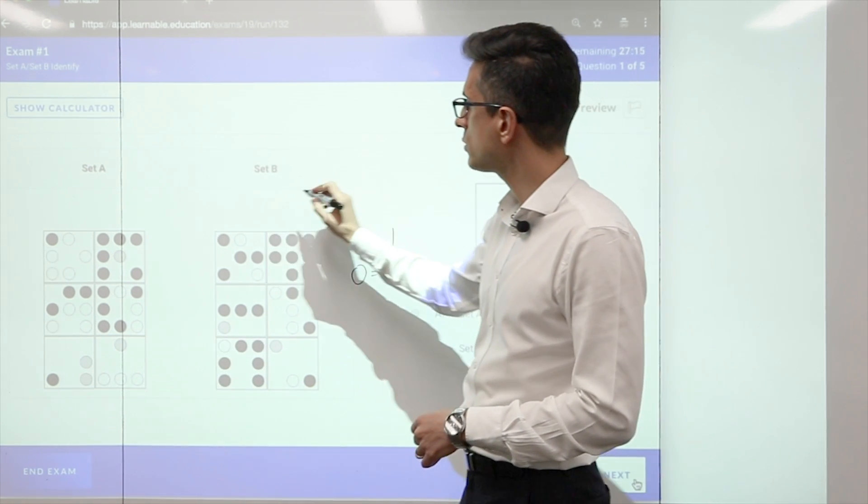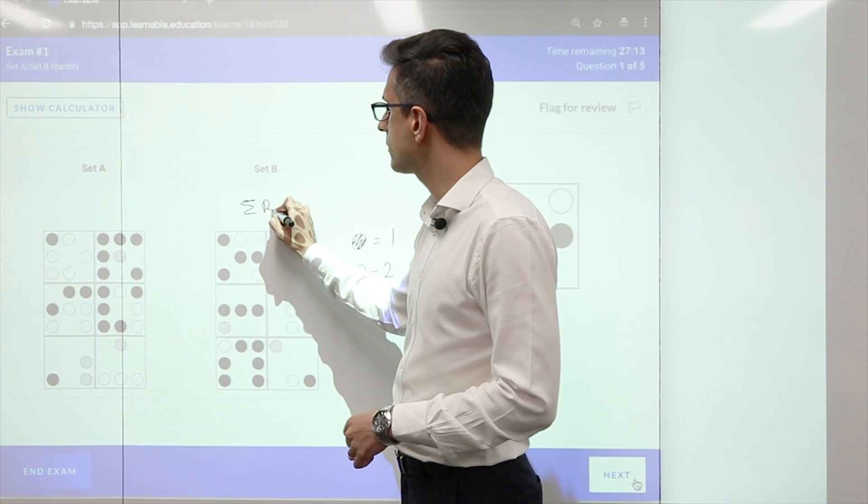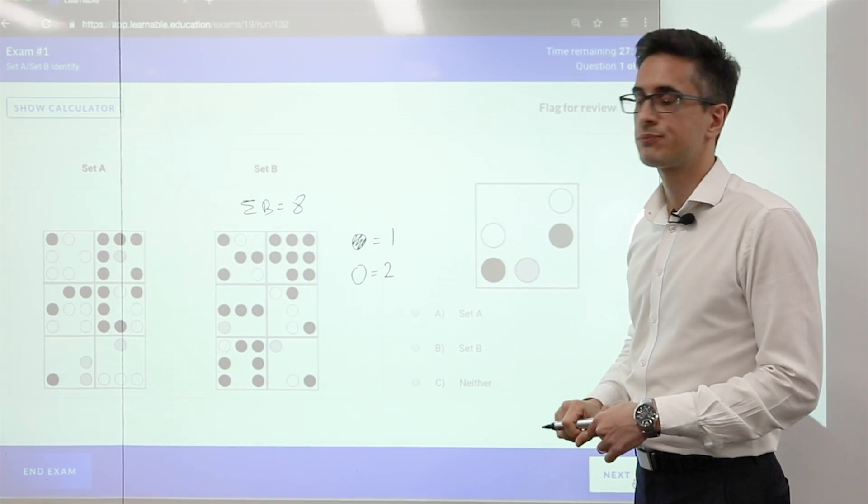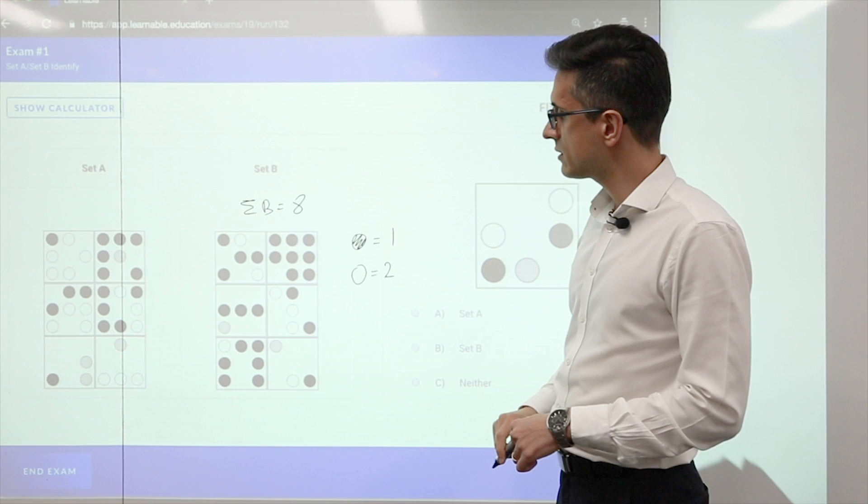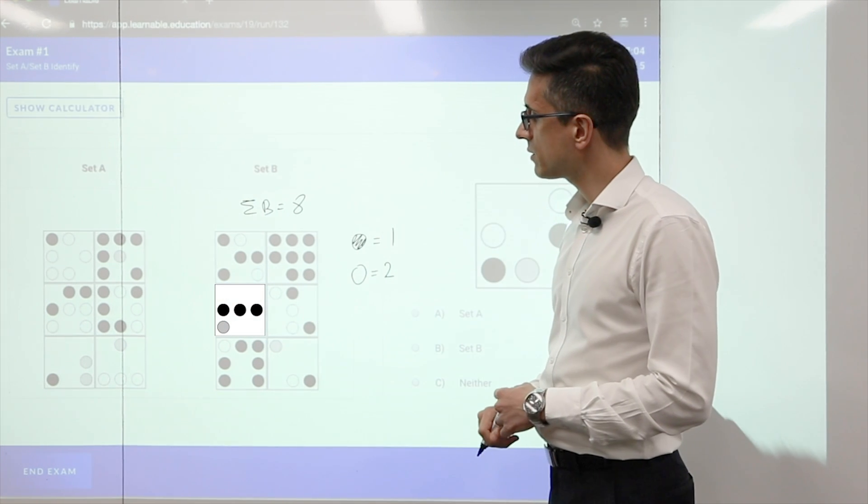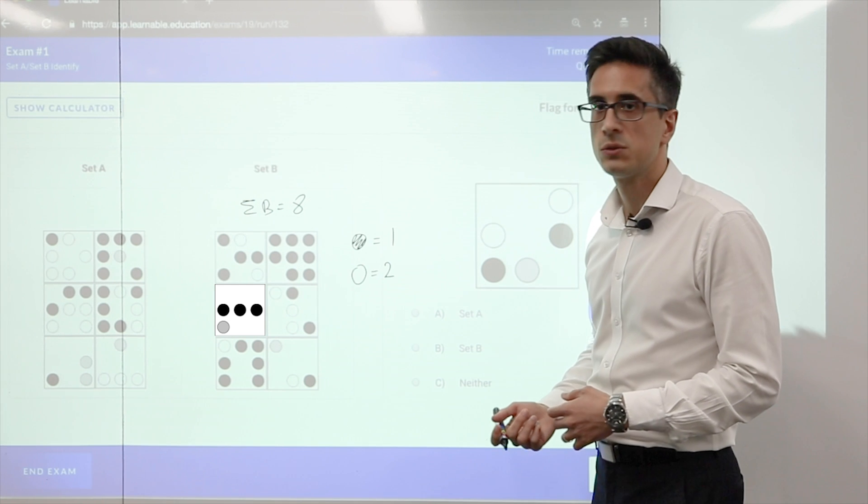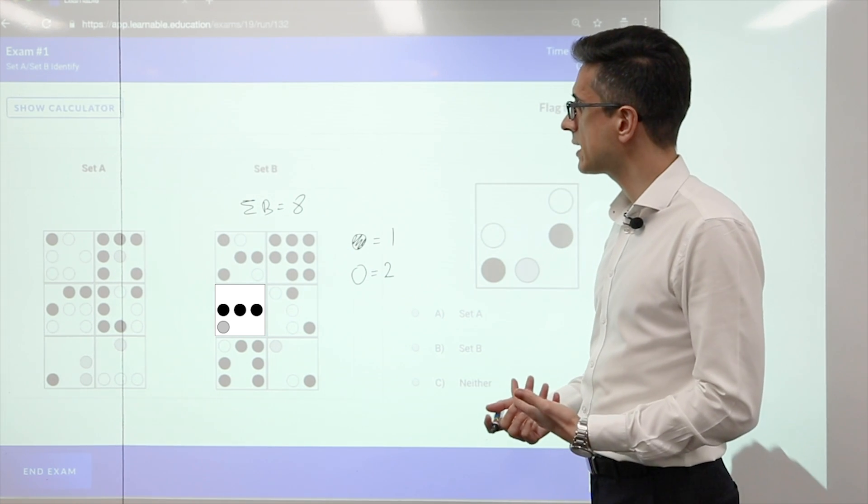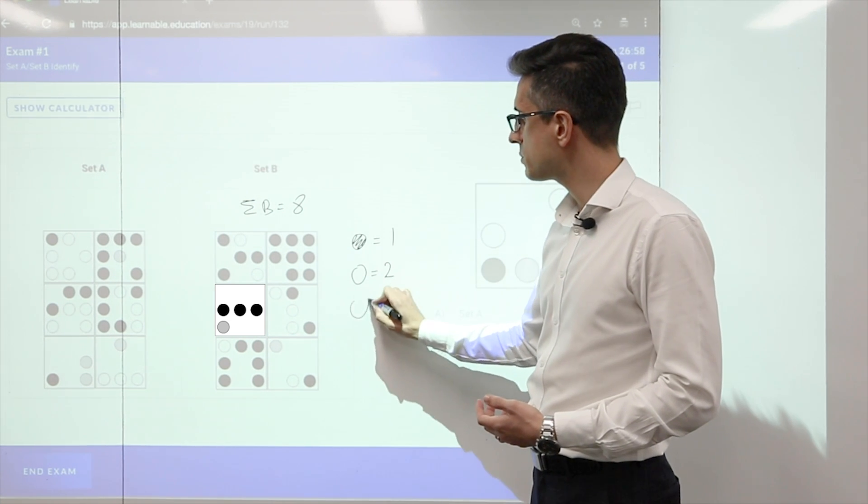And that gives me a total of 8 for each square. Now, I can do the same to find the meaning of the grey circle. If I look at the middle square on the left-hand side, I have 3 black circles and a grey circle. So if we're going to add up to 8, the grey circle must be equal to 5.